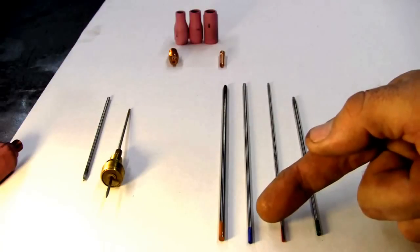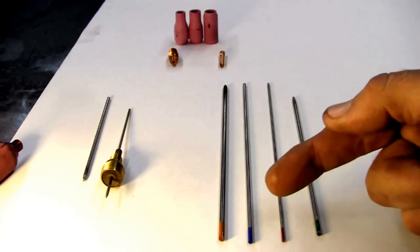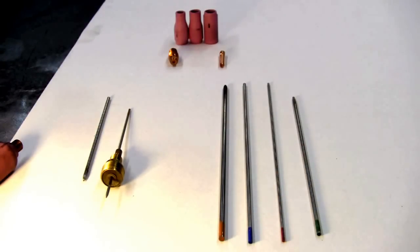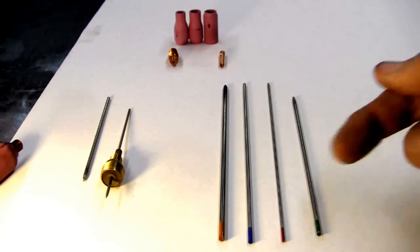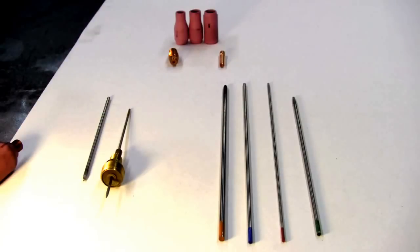You have the blue, which is 2% lanthanated. They also make a gold top that's not shown here, but it's 1.5% lanthanated. Now, for a DC-only operation, you can use the red top, which is the 2% thoriated.